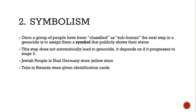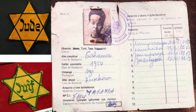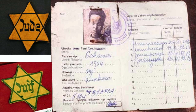In Rwanda, the Tutsis were given identification cards showing which group they belonged to. If asked by someone in authority to show identification, they would know right away which group you were classified into. Ethnicity was first noted on cards by Belgian colonial authorities in 1933. Tutsis were given access to limited education programs and the Catholic priesthood, while Hutus were given less assistance — but at independence in Rwanda, these roles were reversed.